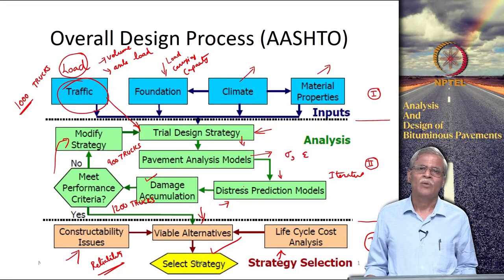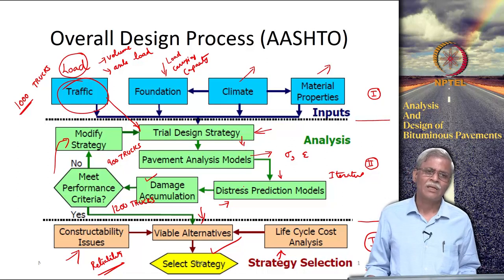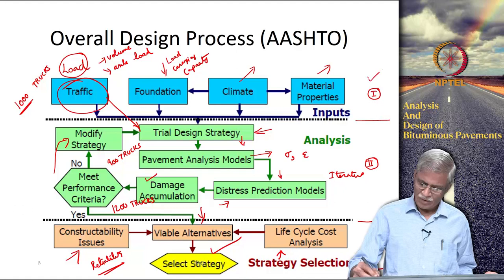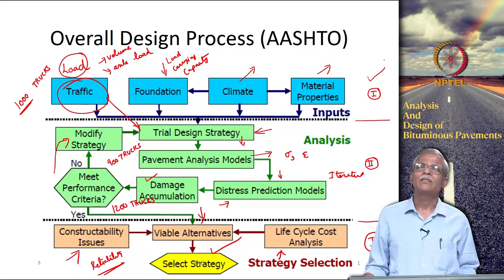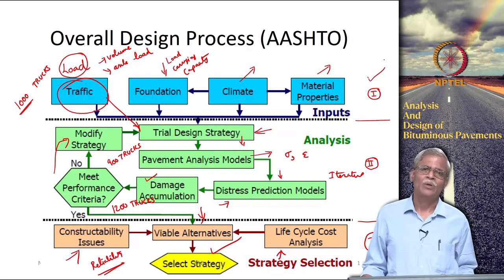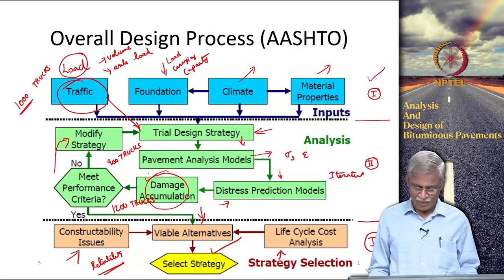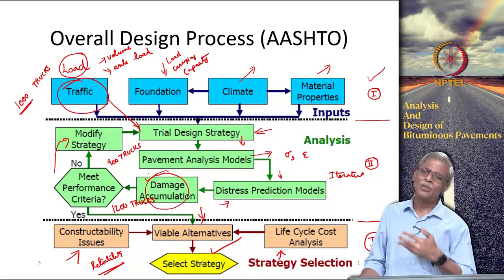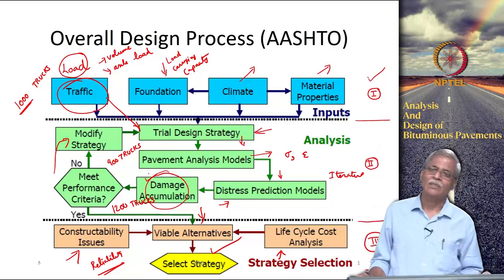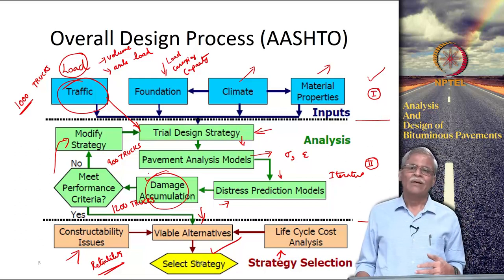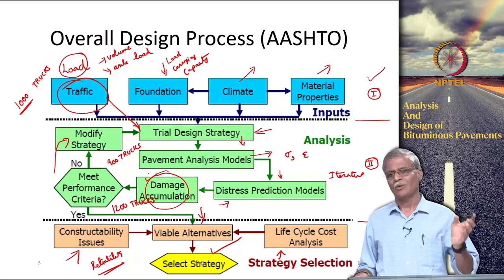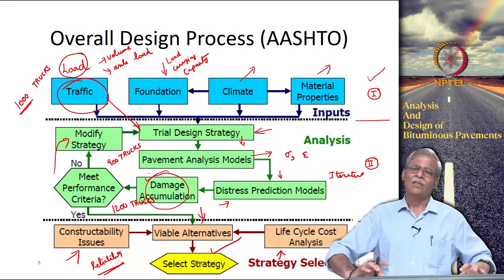Let us continue our discussion on the design process related to bituminous pavement engineering. There are three steps: the first step is the inputs that you provide; the second step is the analysis to compute damage; and the third step covers reliability, lifecycle cost analysis, constructability, pavement management, and associated reliability. The actual design is completed in the first two steps.